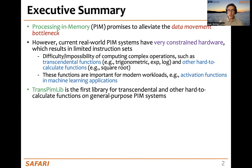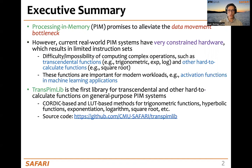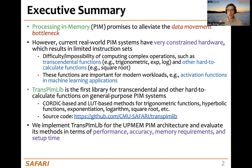We propose TransPIMLib, the first library for transcendental and other hard-to-calculate functions on general-purpose PIM systems. TransPIMLib contains CORDIC-based and LUT-based methods for trigonometric functions, hyperbolic functions, exponentiation, logarithm, square root, etc. The source code is publicly available in our repository. We have implemented the first version of TransPIMLib for the UPMEM PIM architecture and evaluate its methods in terms of performance, accuracy, memory requirements, and setup time.